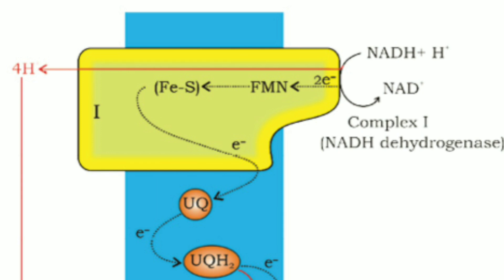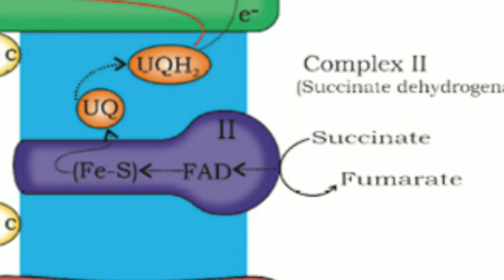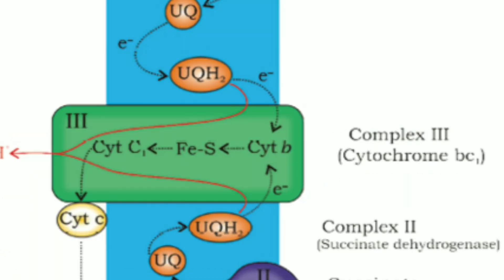Now let us see the electron transport system in detail. At first, complex 1 — that is NADH dehydrogenase enzyme complex — oxidizes NADH+H+. Then the electrons are transferred to ubiquinone. Ubiquinone also receives reducing equivalents from complex 2, which oxidizes FADH2. So from both complex 1 and complex 2, electrons are received by ubiquinone, which in turn is reduced to form ubiquinol, UQH2.